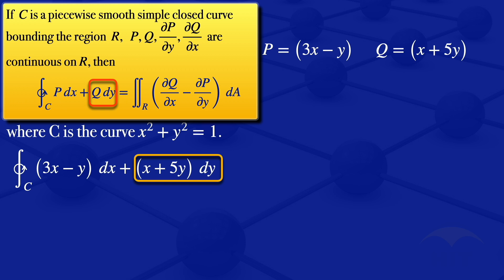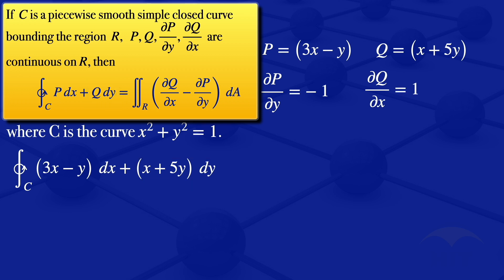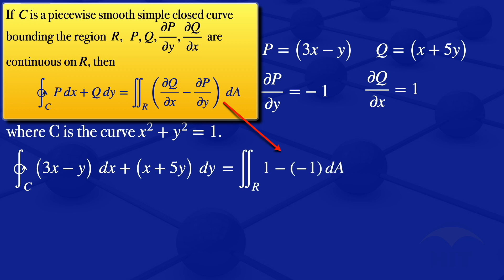Now we evaluate the partial derivatives. The partial derivative of P with respect to y is equals to minus 1. The partial derivative of Q with respect to x is equals to 1. Substituting these partial derivatives into the formula, we obtain the double integral over the region R of 1 minus minus 1 dA, which gives us a 2. So we have the double integral over the region R of 2 dA.